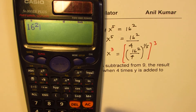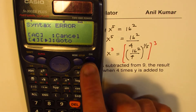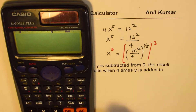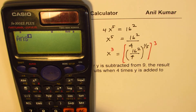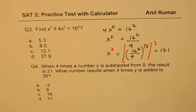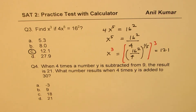Using the calculator: compute 16 squared divided by 4, which gives 64. Then apply the exponent of 3 over 5 — that is, raise 64 to the power of 3 divided by 5 — and we get approximately 12.1. So the answer is option C. Make sure to square first and then divide; otherwise you might get a wrong answer.